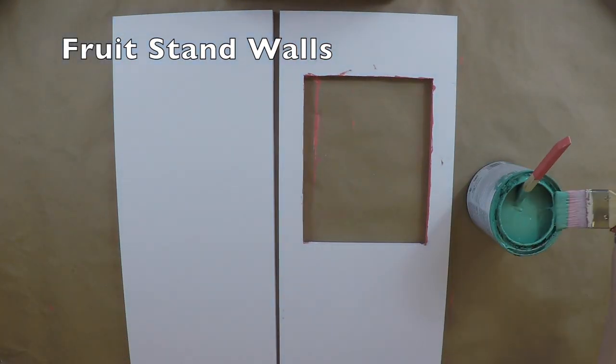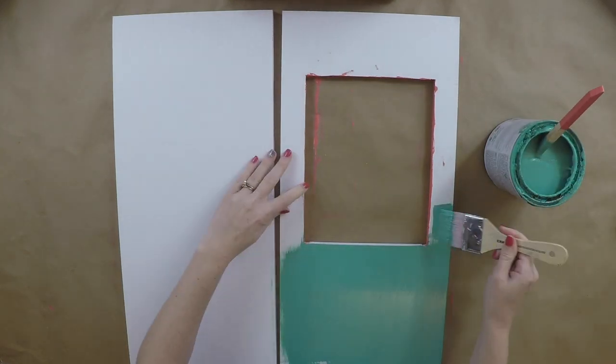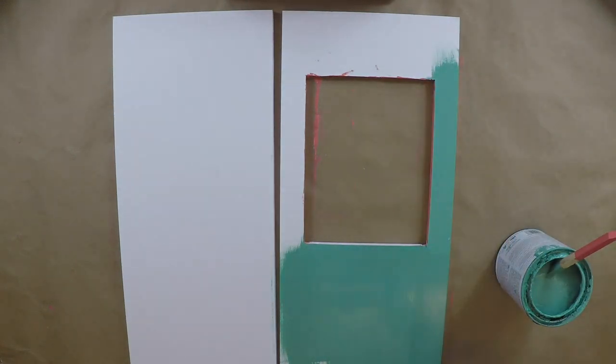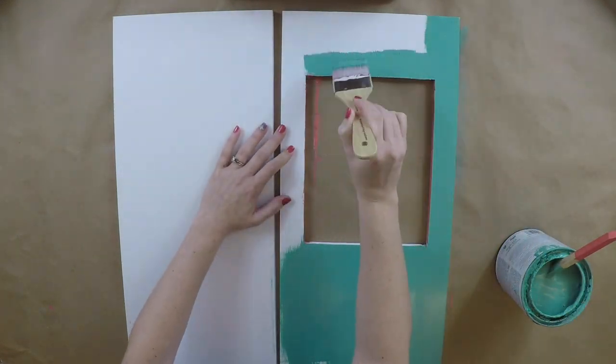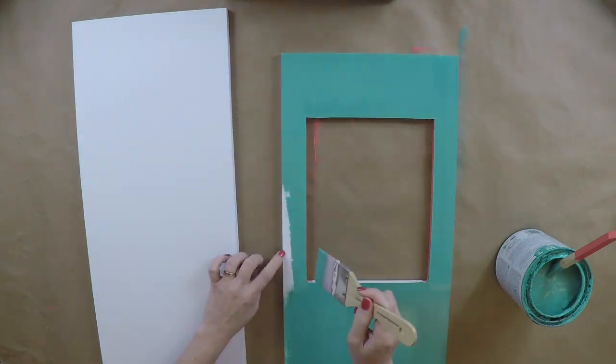Start by cutting out the walls for the fruit stand. Just follow the plans and cut it out with a utility knife or an exacto knife. Be sure to have adult supervision. I'm using the half inch foam board.